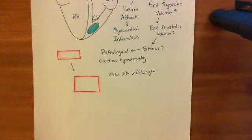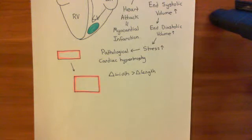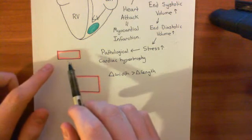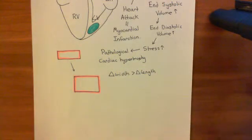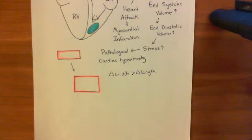Welcome to this next video in which we are discussing pathological cardiac hypertrophy. We've discussed what happens: the cardiomyocytes go from having their normal structure to having a much thickened structure, and this initially helps the wall of the heart to produce a greater force of contraction. However, in the long run, it's going to lead to loss of contractility.